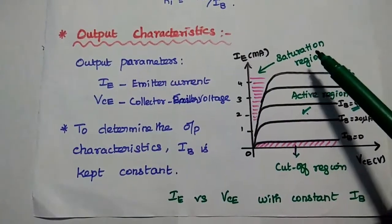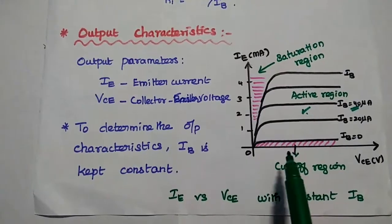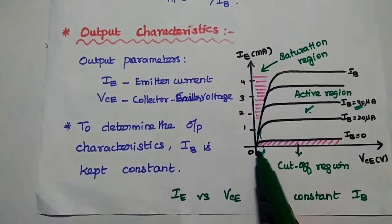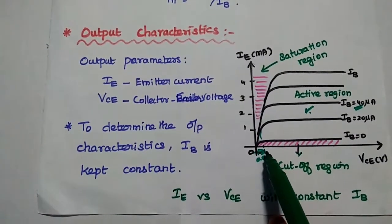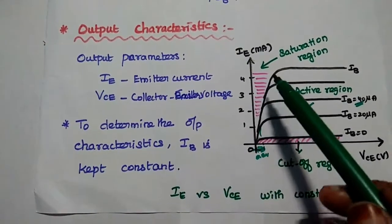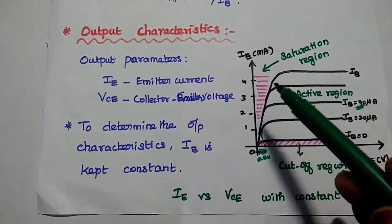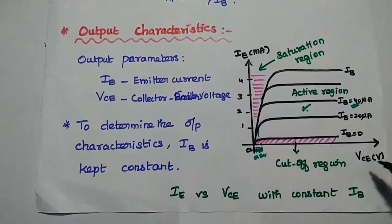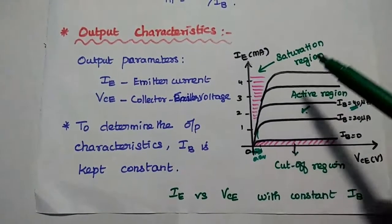The third region is the saturation region. Whenever the output voltage is reduced to a very small value — around 0.2 volts — there is very large current conduction at the output side. Within this small range, the output current increases very rapidly for a small increment of VCE. That region is called the saturation region.